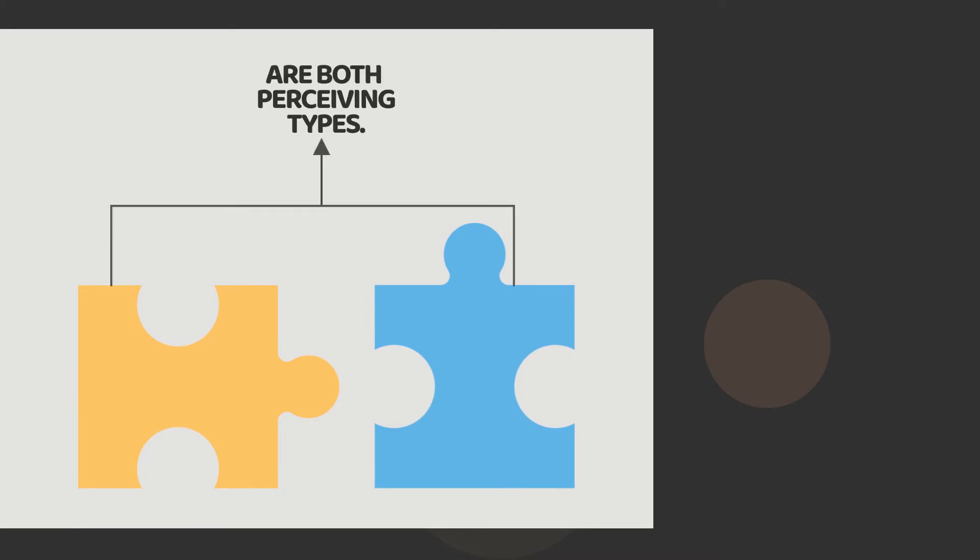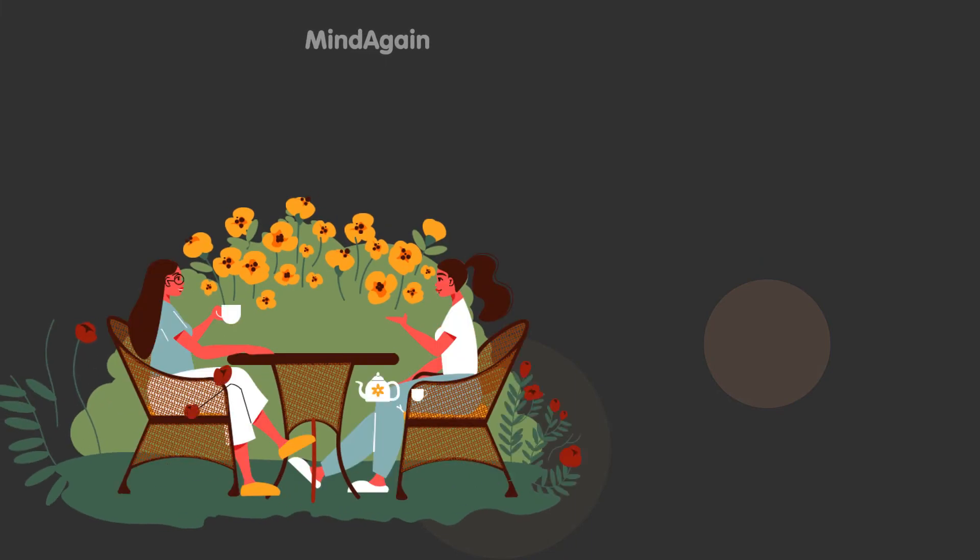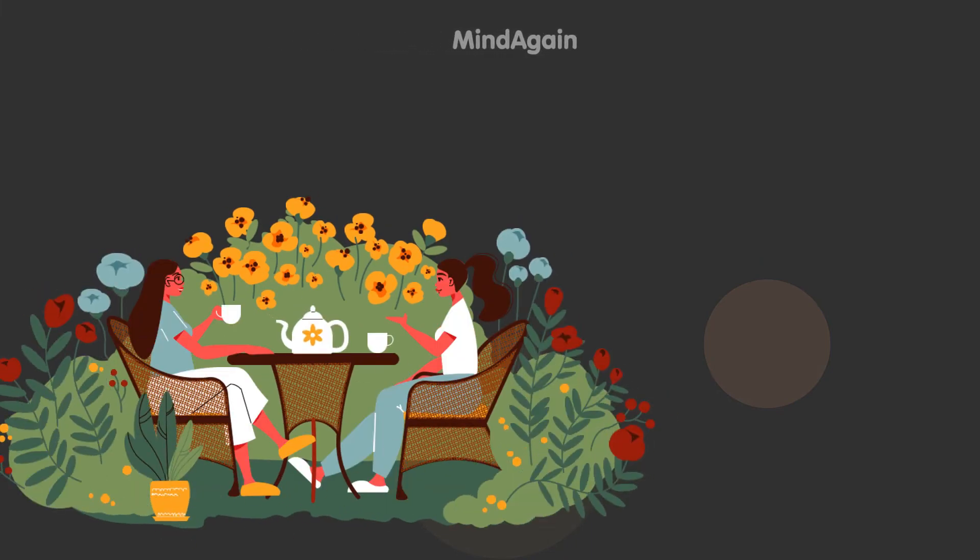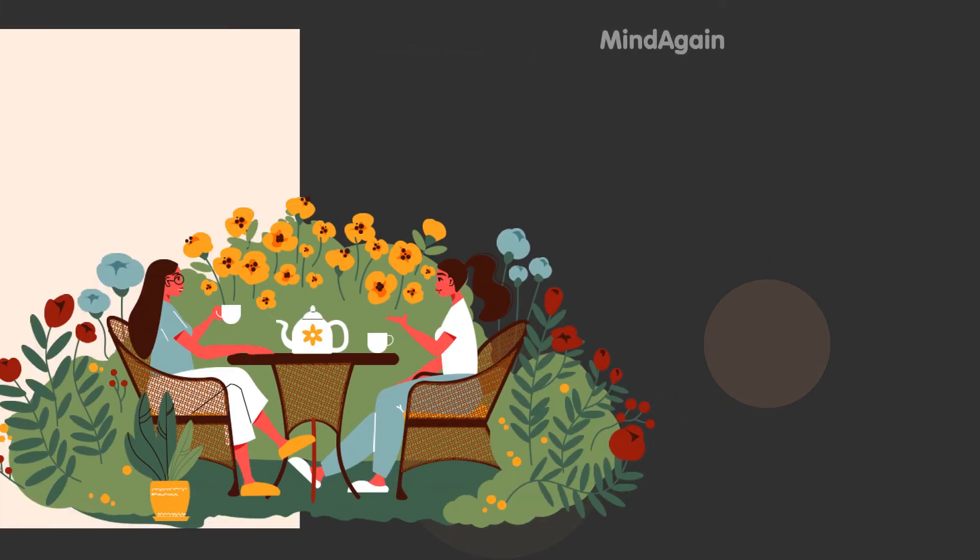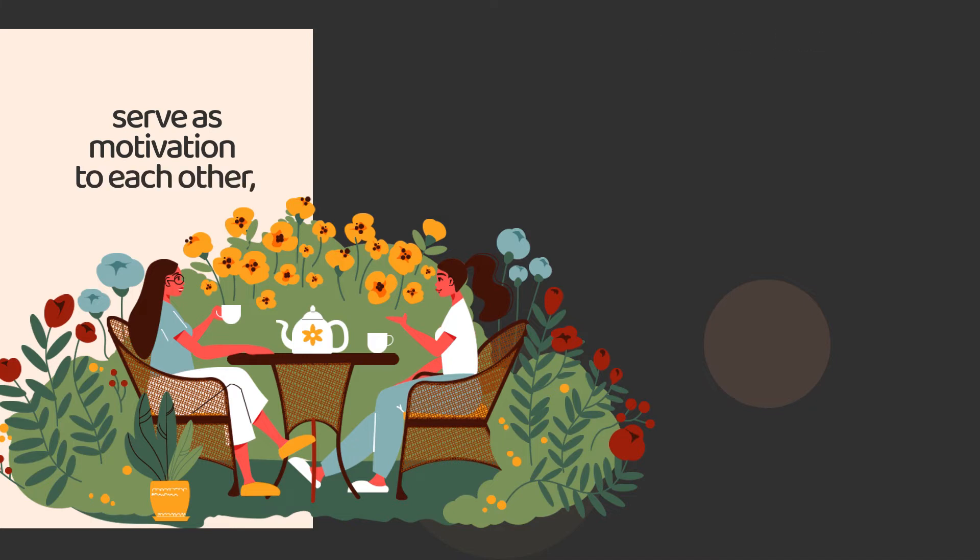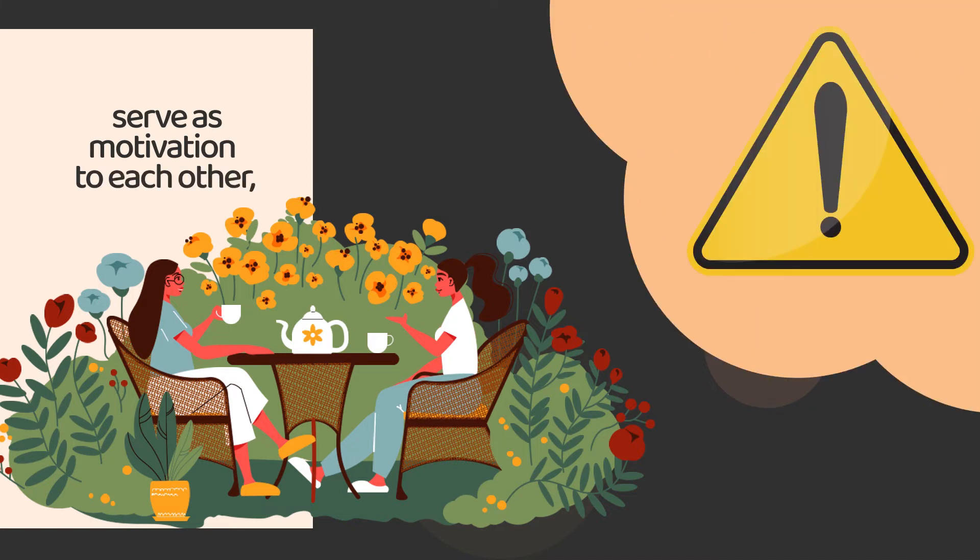Communication. In terms of personality, one of the characteristics INFPs share with ESTPs is that they are both perceiving types. By perceiving types, we mean that they are likely to wait for the eleventh hour before they take credit for a situation they are intended to handle. So they can serve as motivation to each other, reminding one another of how detrimental it can get if they don't up their supposed responsibility.